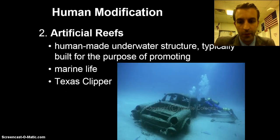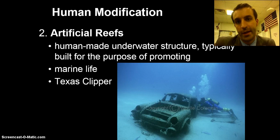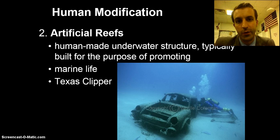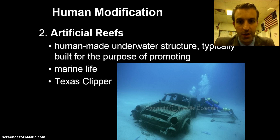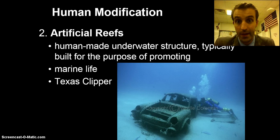We talked about artificial reefs like the Texas Clipper. Now, this is one of the good things we do for the ocean. These are man-made underwater structures like ships, bricks, or tires, and they're built with the idea of promoting biodiversity — because when you drop these things down into the ocean, little things come and live on them.